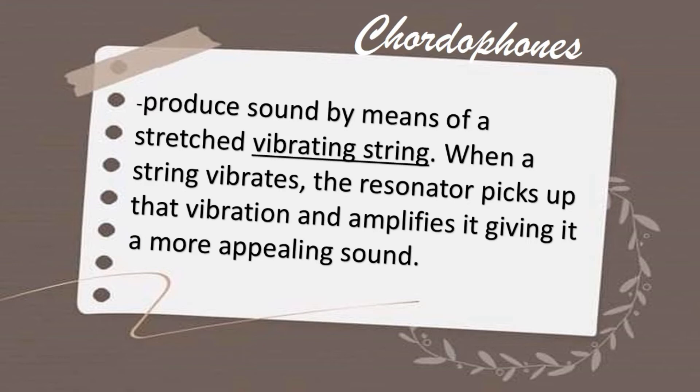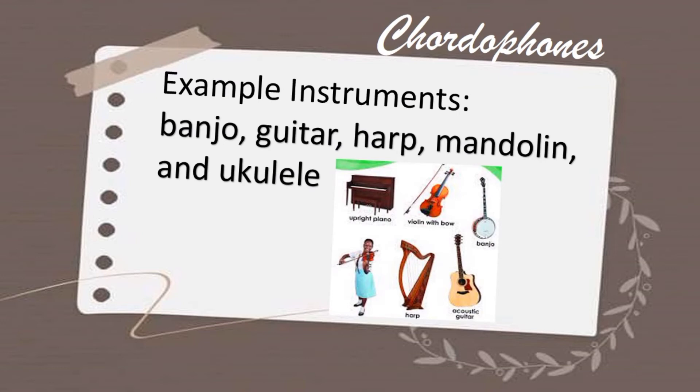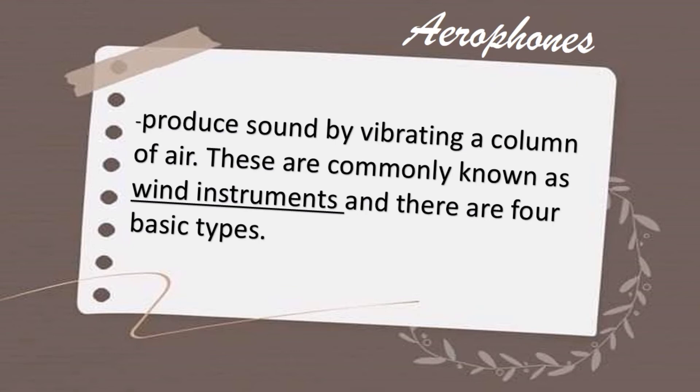The next classification is chordophones. From the word itself, chordophones produce sound by means of a stretched vibrating string. When the string vibrates, the resonator picks up that vibration and amplifies it, giving it a more appealing sound. Take note: chordophones have a string. Example instruments include bajo, guitar, harp, mandolin, and ukulele.